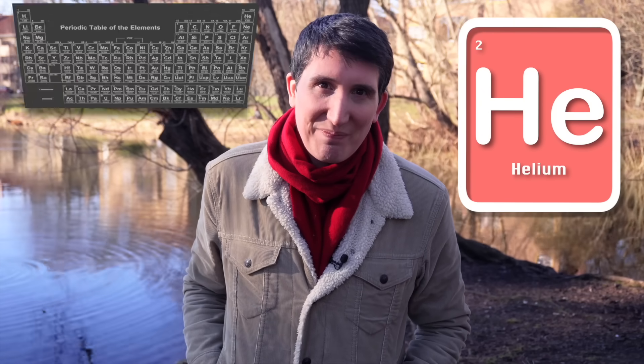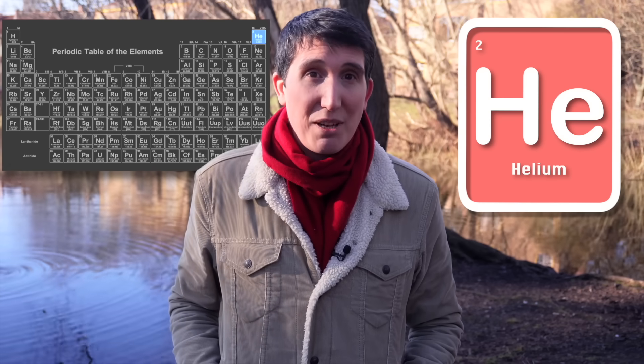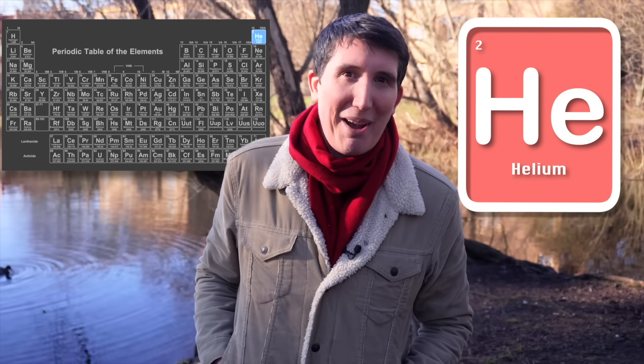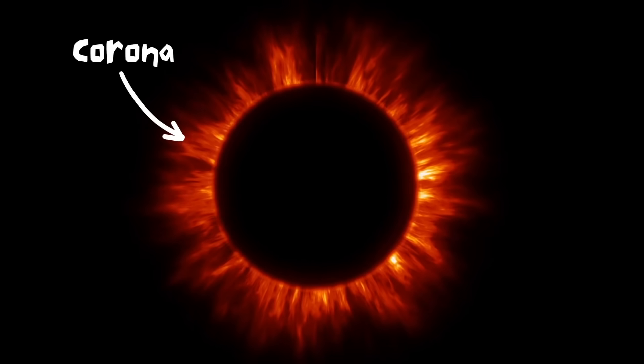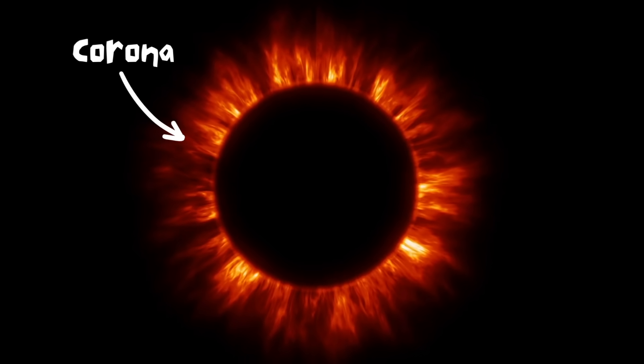So let's lighten things up again with helium — it's also at the top of the table, so it is high time we talk about it. It gets its name from the Greek god of the sun, Helios. Why? Because it was first detected in the corona of the sun. 'Corona' itself means 'crown,' and it's the bit you see surrounding the sun during an eclipse — that shiny aura.